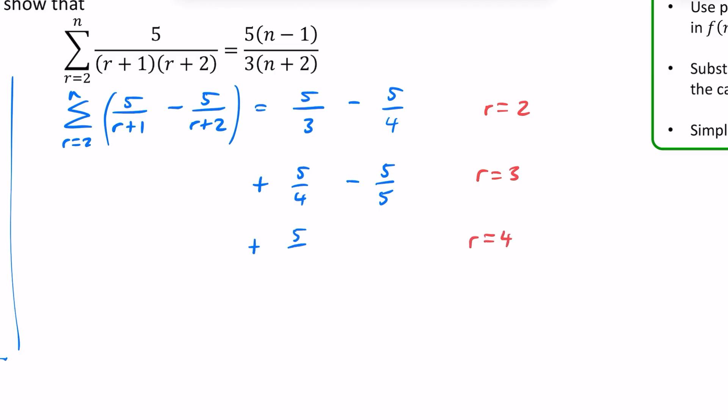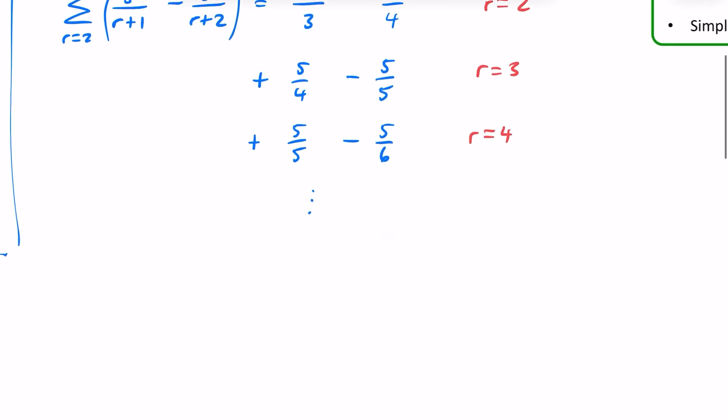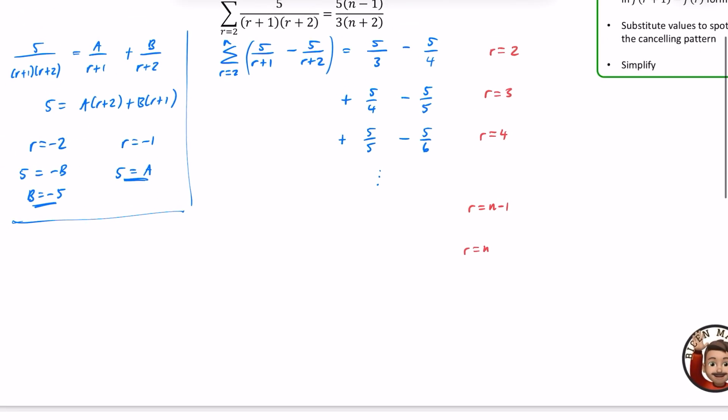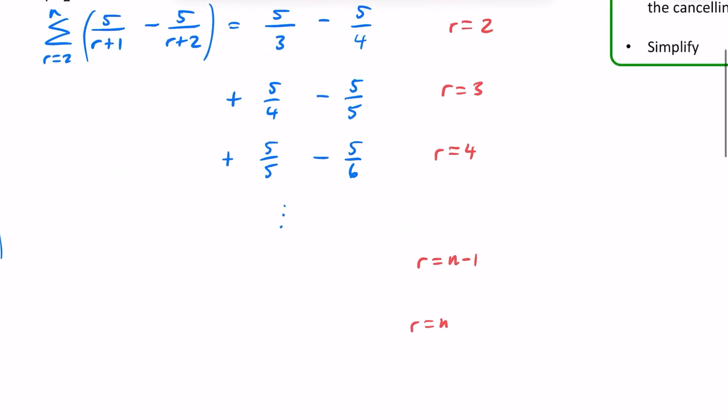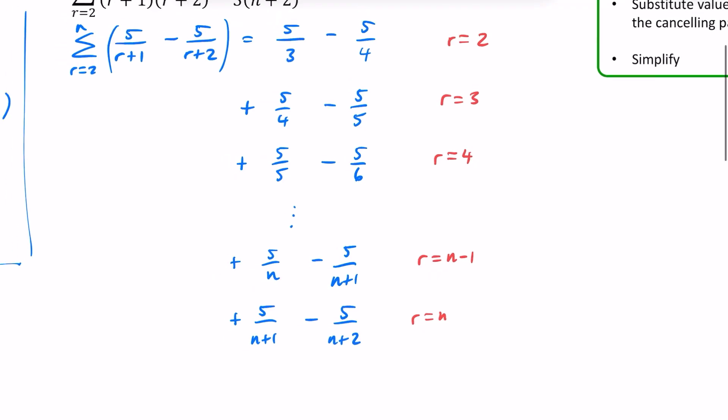So this would be a 5 over 5 minus a 5 over 6, substituting into this thing that we've got here. And I just do a dot, dot, dot to show I'm now going to do just the last couple of ones. I'll typically just do r equals N-1 and r equals N for those final ones. This will cancel with this, this will cancel with this. We have this kind of diagonal cancelling pattern.